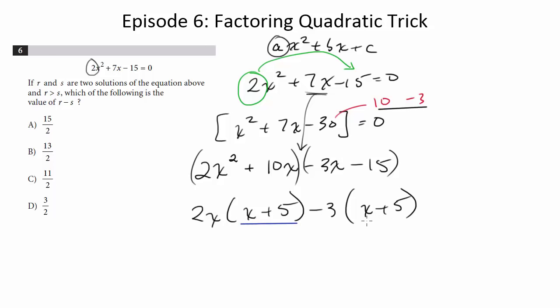And what you need to see is this and this equaling each other. Because then I can factor the x plus 5 out of both of these terms. And I get x plus 5 times 2x minus 3. And there we go. So now I factored it.